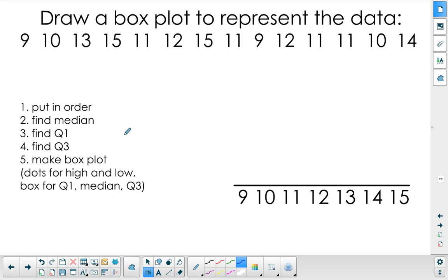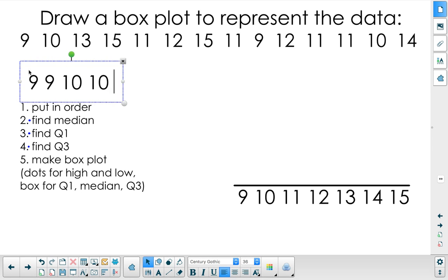Looking forward, we're going to find the median, quartile 3, and quartile 1. The very first thing we need to do is put these in order. I can see I have 2 9s, a 10, another 10.